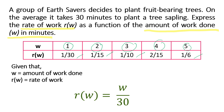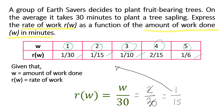Let's consider the case of w = 2. When two are planted, we assume r(w) is 1/15. Let us substitute w = 2 into the equation. 2 over 30, when simplified by dividing both by 2, will become 1 over 15. So it matches the value of 1/15 in the table.